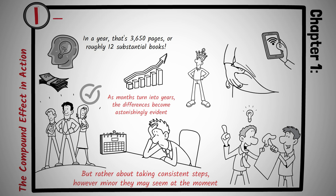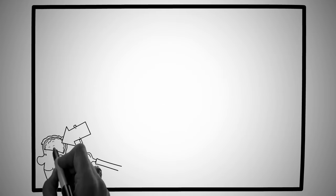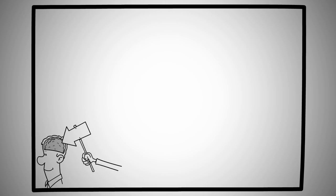Principle number one is consistency over time. Recognizing that it's the accumulation of small, smart choices, made repeatedly, that generates transformative outcomes. Every decision we make, be it large or small, has the potential to shape our futures. It's like setting a ship's course. A small deviation in direction can lead it to a completely different destination over a long journey.